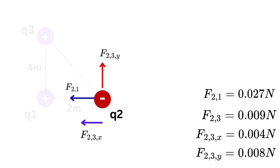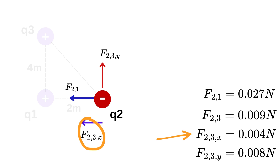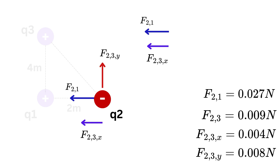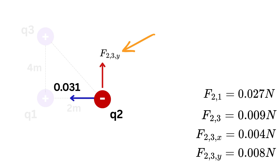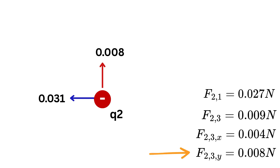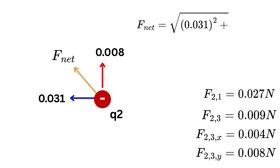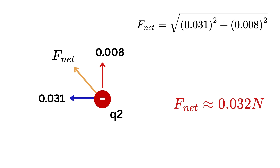Combining both forces: from F(2,1) we have 0.027 N along the negative x-axis, and from F(2,3) we get an additional 0.004 N to the left and 0.008 N upward. So the total x-component of the net force is approximately 0.031 newtons to the left, and the total y-component is 0.008 newtons upward. Using the Pythagorean theorem, the magnitude of the net force is √(0.031² + 0.008²) ≈ 0.032 newtons.